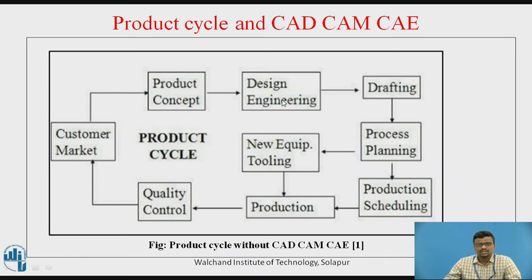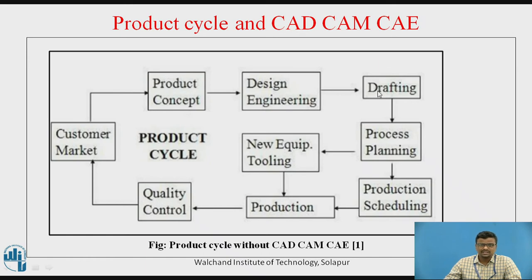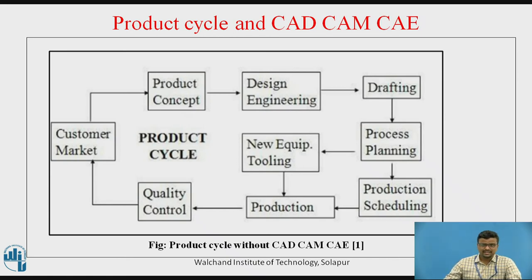In design engineering, the work is very much manual — we manually work on the new design process for the new product, developing and constructing the design on paper or different types of sheets. This is a very hectic part that can take a very long time. The design is then connected to drafting sheets, which provide front view, top view, side view, left-hand side view, right-hand side view, and sectional views.